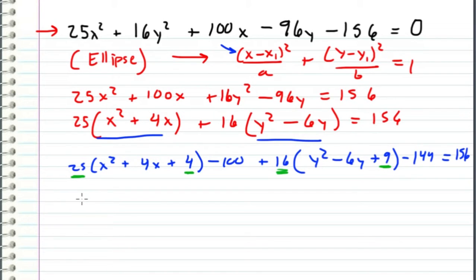So the reason why I did that is so that I can complete the square, because I can rewrite this as x plus 2 squared plus 16 times y minus 3 squared, which is equal to 156 plus 100 plus 144.